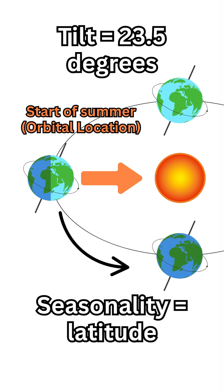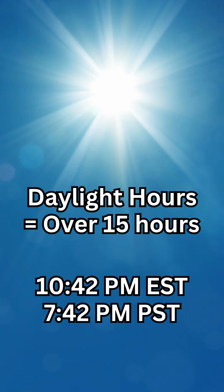Right now it is the summer solstice in the northern hemisphere and the winter solstice in the southern hemisphere — going into summer in the north and into winter in the south. The official start of the summer season in the northern hemisphere, and in the United States in particular, is 10:42 p.m. on the east coast and 7:42 p.m. on the west coast, because there is a three-hour difference in time zones between the east and west coasts.